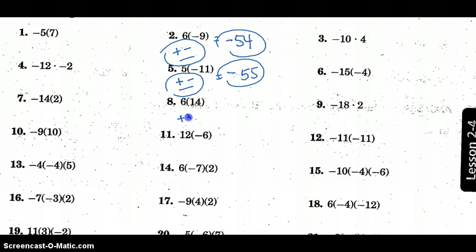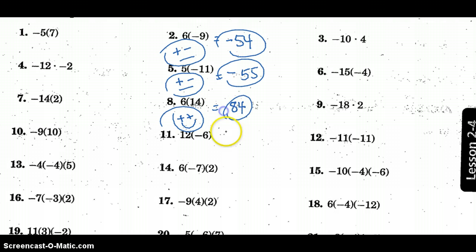Two positives make me happy, so I'm going to have a positive outcome. 6 times 14 is 84. A positive and a negative will give me a negative answer — negative 72.